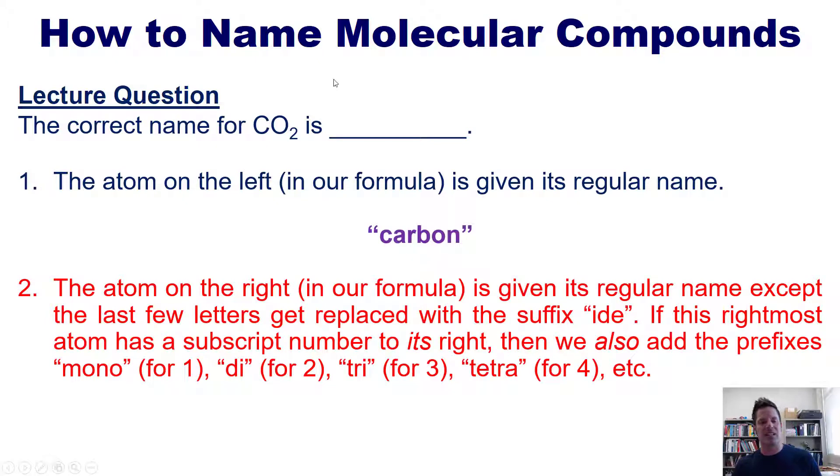Rule number two: The atom on the right is given its regular name, except we take off the last few letters and add the suffix '-ide' at the end of it. So this is oxygen, so instead of calling it oxygen, we call it oxide. Now, if you have a number to the right of it in the formula, in this case we do, we also have to add a prefix corresponding to that number. The number here is two, so we have to add the prefix di before writing oxide in our name. Thus, this compound is called carbon dioxide. You got it? Cool.